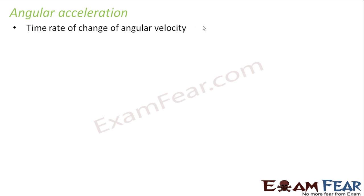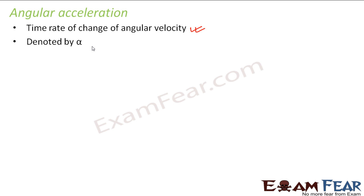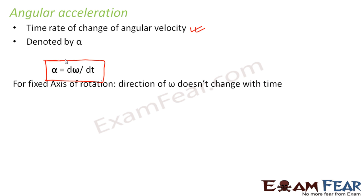Now let us talk about angular acceleration. Angular acceleration is the time rate of change of angular velocity. Analogous to linear motion — where rate of change of displacement was velocity and rate of change of velocity was acceleration — here, time rate of change of angular velocity is angular acceleration, generally denoted by alpha. We define alpha as d omega by dt. For a fixed axis of rotation, the direction of omega does not change with time, so alpha can be written in scalar form as alpha equals d omega by dt.